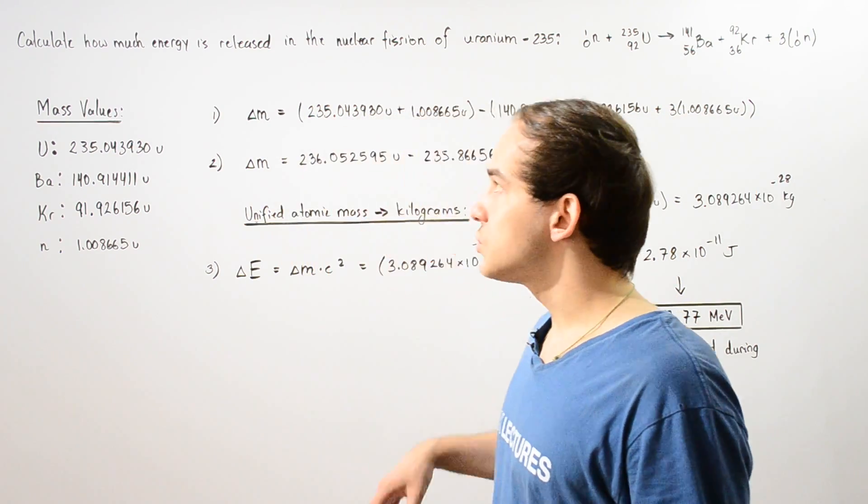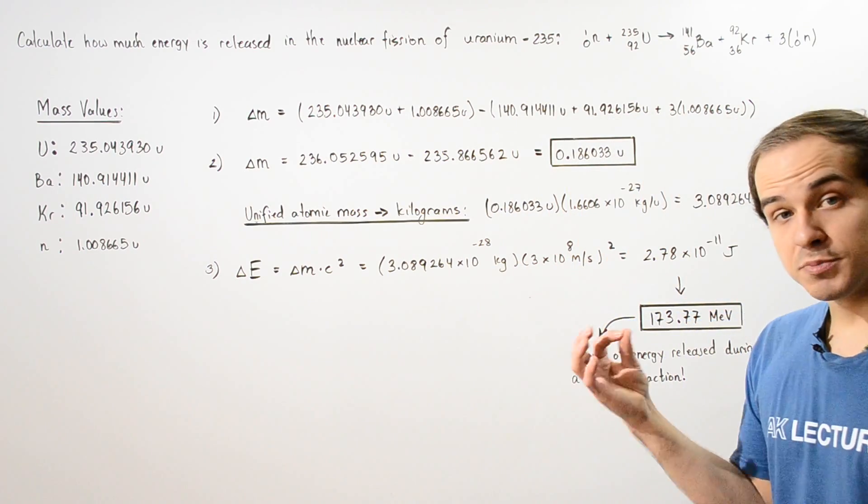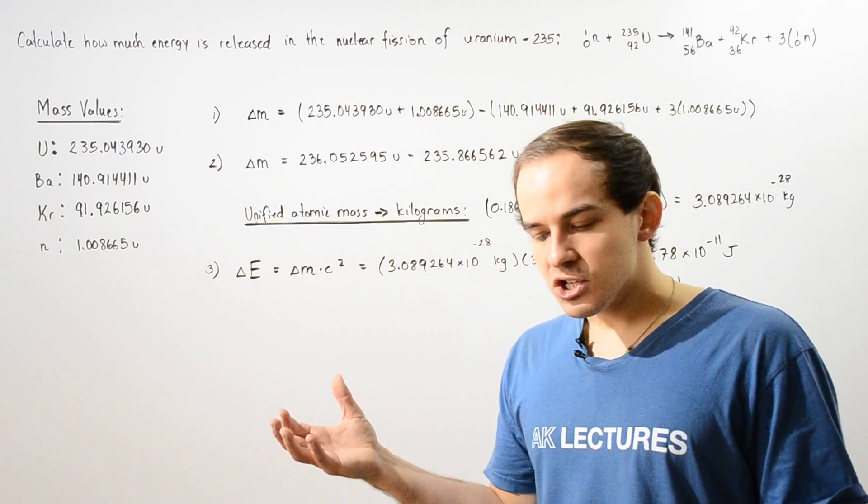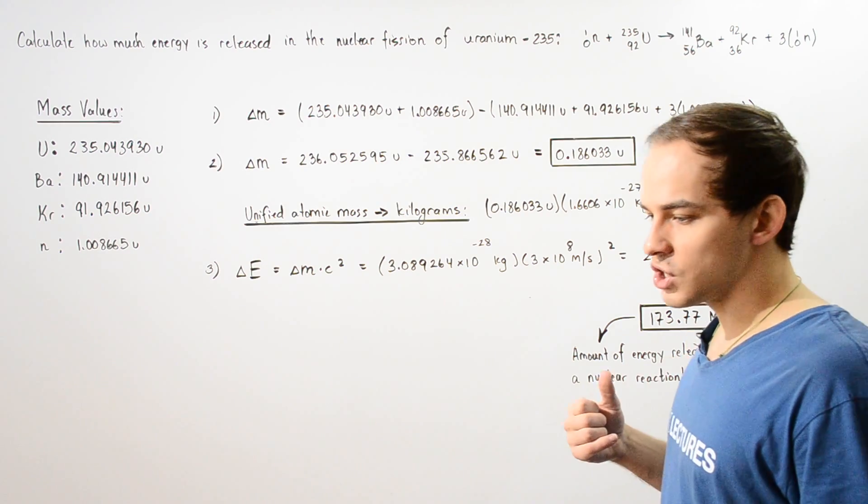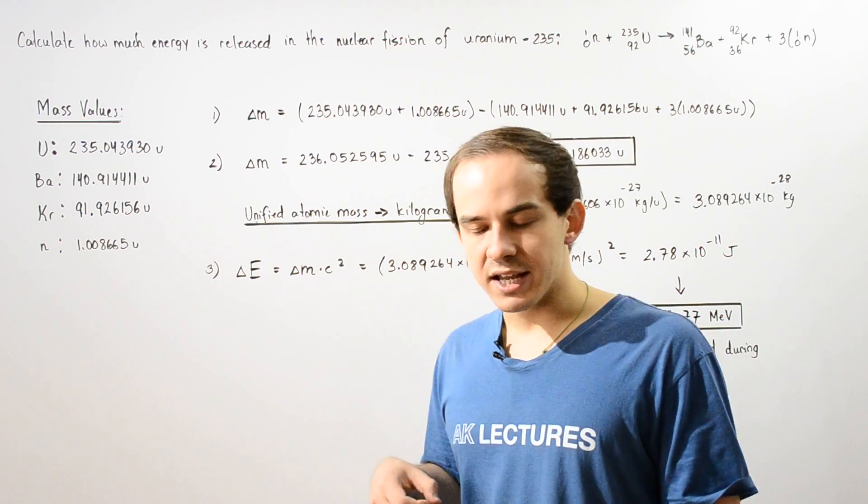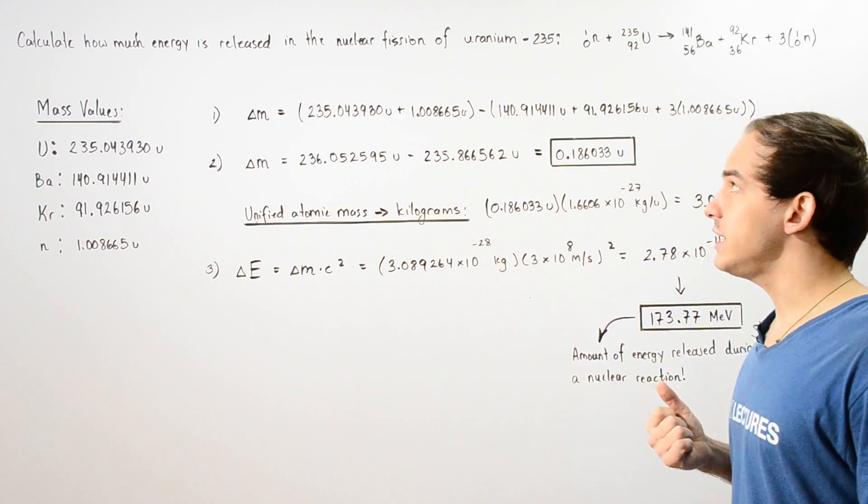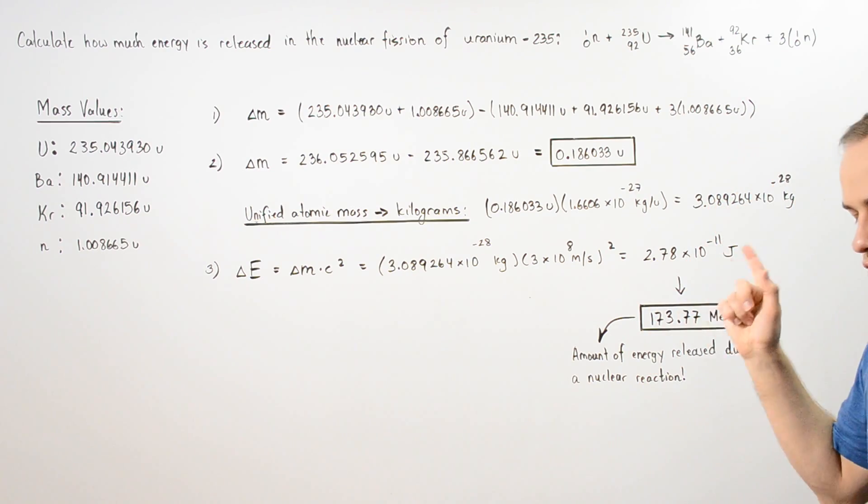So, let's suppose that we are examining a specific nuclear reaction, the nuclear fission of uranium-235 isotope, and we want to calculate how much energy is released in this nuclear fission reaction.